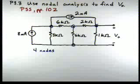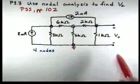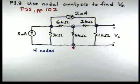And from our problem-solving strategy, step one says select one node in the N node circuit as a reference node. And for this problem, let's select the bottom node as a reference node. And that way we can solve for V0 directly.